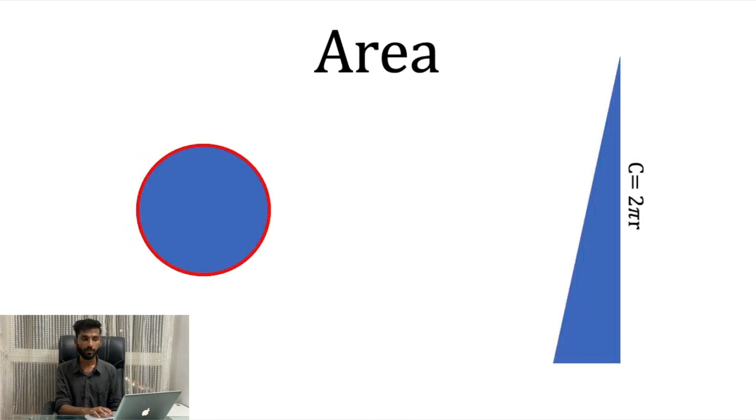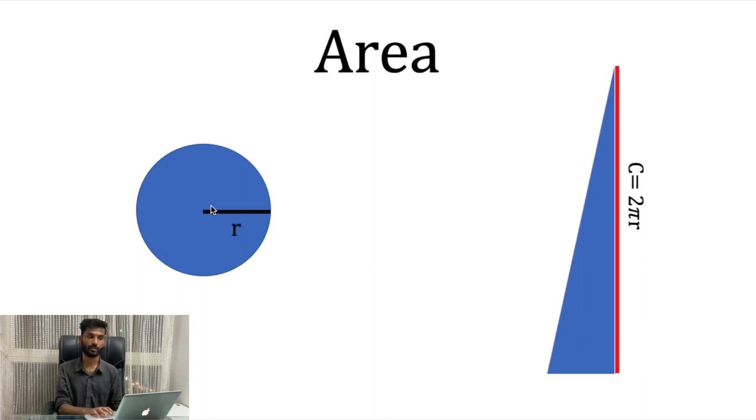The triangle we got, the outermost length was nothing but the height of the triangle. What is the base then? The base is nothing but the radius of the circle. How? If you observed it clearly, we cut this outer ring and put it over here.